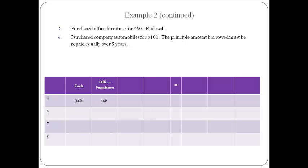Automobiles are purchased for $100 and the company agrees to pay the amount equally over five years. The first year amount, or one-fifth, is recorded as short-term notes payable. The other years, paid after one year, are recorded to long-term notes payable.